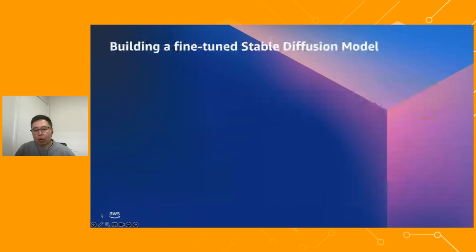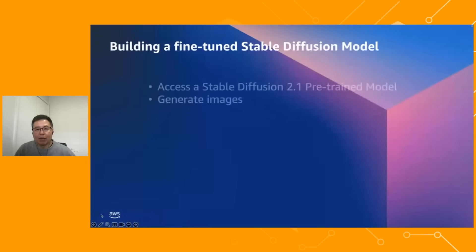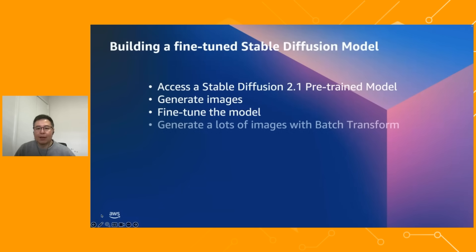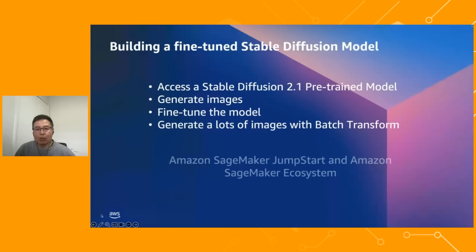Next, I'm going to take you through the steps of accessing a Stable Diffusion 2.1 pre-trained model to generate images, fine-tuning the model to generate personalized images, and generating lots of images with batch transform — all done easily without ML expertise using Amazon SageMaker JumpStart and the Amazon SageMaker ecosystem.